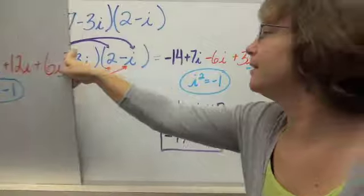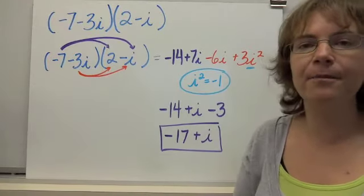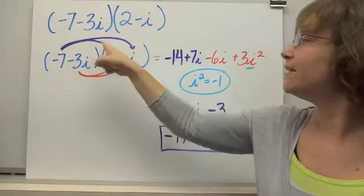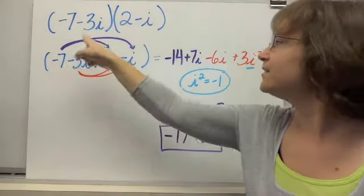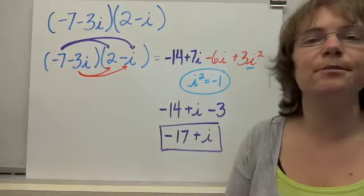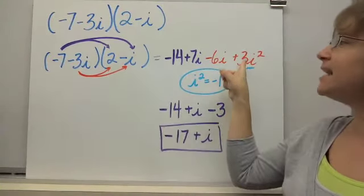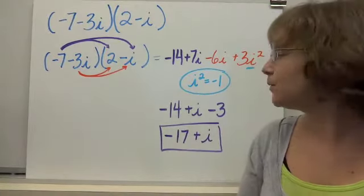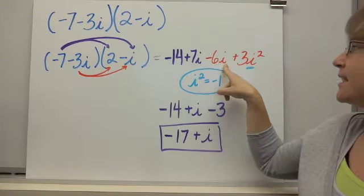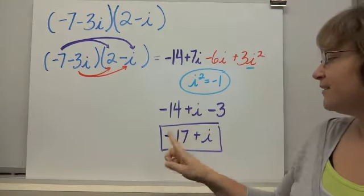Let's look at another example: negative 7 minus 3i times 2 minus i. We have a couple of negative signs, so we need to remember our operations with integers. Distributing the negative 7: negative 7 times 2 gives negative 14, and negative 7 times negative i gives positive 7i. For the negative 3i: negative 3i times 2 is negative 6i, and negative 3i times negative i is positive 3i squared. Since i squared equals negative 1, combining like parts gives negative 14, plus 7i minus 6i which is just i, minus 3. So we get negative 17 plus i.